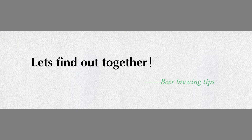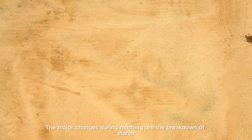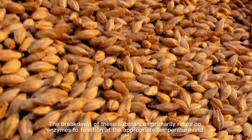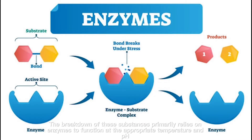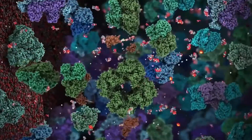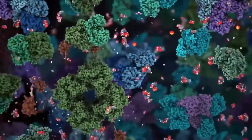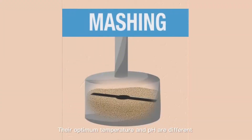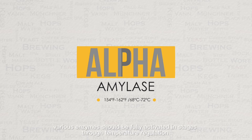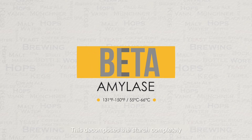Let's find out together the major changes during mashing. These are the breakdown of starch, protein, and beta-glucan. The breakdown of these substances primarily relies on enzymes functioning at the appropriate temperature and pH. Taking the breakdown of starch as an example, the amylases in malts include alpha amylase, beta amylase, maltase, etc., and their optimum temperature and pH are different.